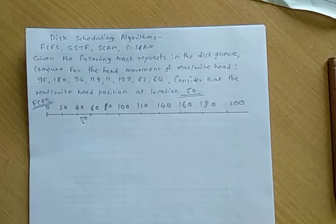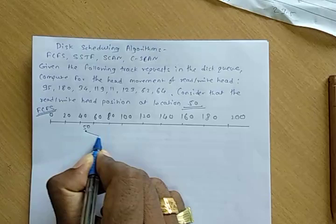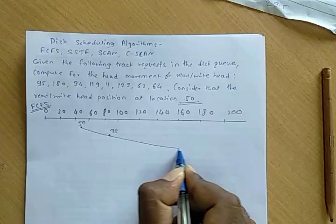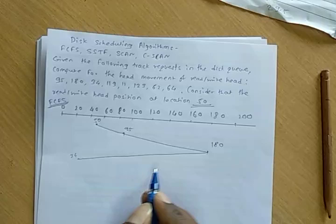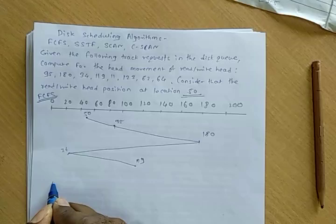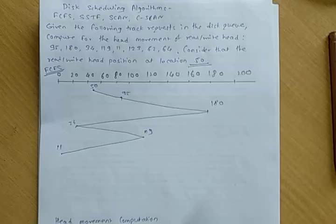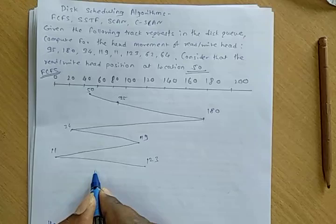In FCFS, we consider the sequence as given. The read/write head visits positions in order: first from 50 to 95, then 95 to 180, then 180 to 34, then 34 to 119, then 119 to 11, then 11 to 123, then 123 to 62, and finally 62 to 64.